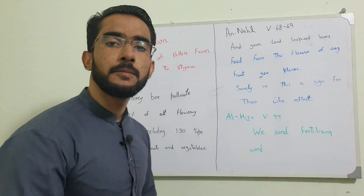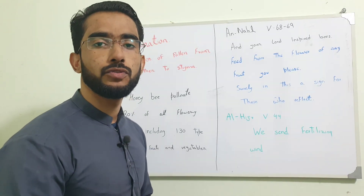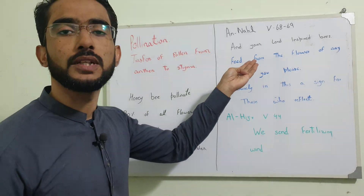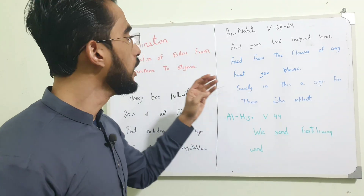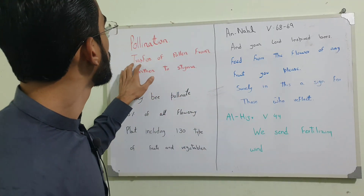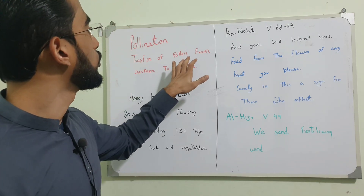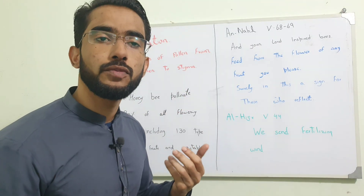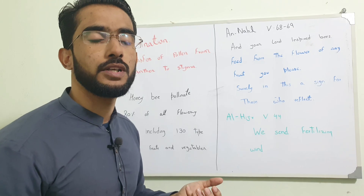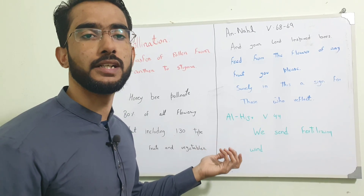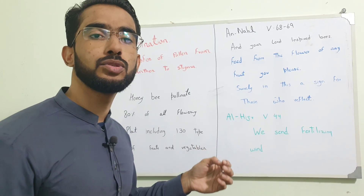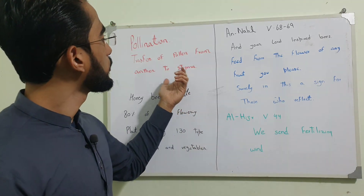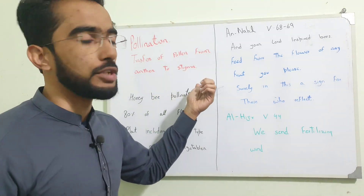Assalamu alaikum. My name is Ammar Babras and we are going to discuss about pollination and what does the Quran say about pollination. Pollination is the transfer of pollen grain from anther to stigma. It is the type of reproduction for angiosperm plants. Angiosperms are those which produce flowers. Flowering plants reproduce by pollination.